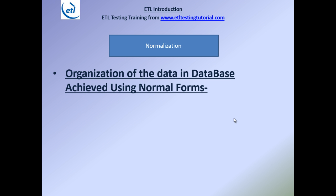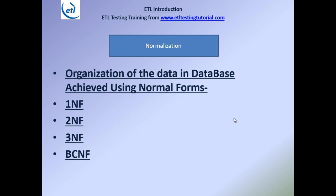Just follow these three or four rules and your data will be organized. Those rules are called normal forms — first NF, second NF, third NF, BCNF. If you follow these rules, your data will be organized and that would be called a normalized database.